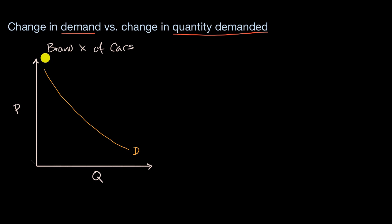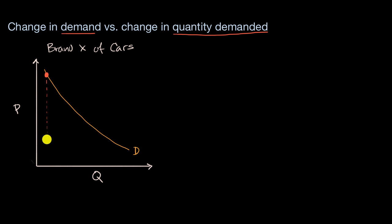As context, I have price versus quantity here for brand X of cars in a certain market, and you can see the demand curve for brand X of cars. It follows the classic law of demand — at a high price, there is a low quantity demanded. A quantity demanded, which I'll call QD1, is associated with a particular point on the demand curve, not the whole curve itself.